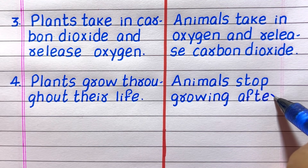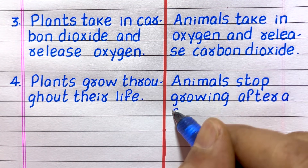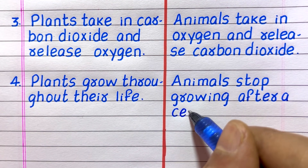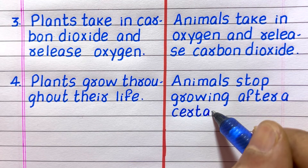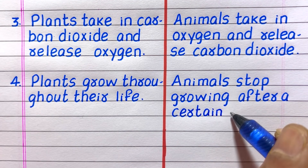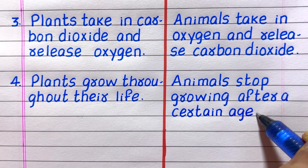Fourth difference: plants grow throughout their life, whereas animals stop growing after a certain number of years.